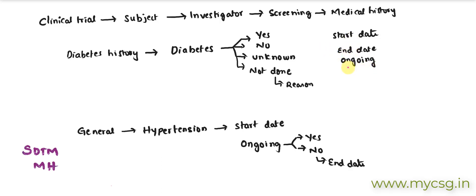After the specific diabetes history, the investigator checks for any general medical history reported by the subject. For example, the patient might report having hypertension. They make a note of it, and follow-up questions ask when it started, whether it is ongoing — captured as 'Y' — or if it has ended, in which case they capture the end date.